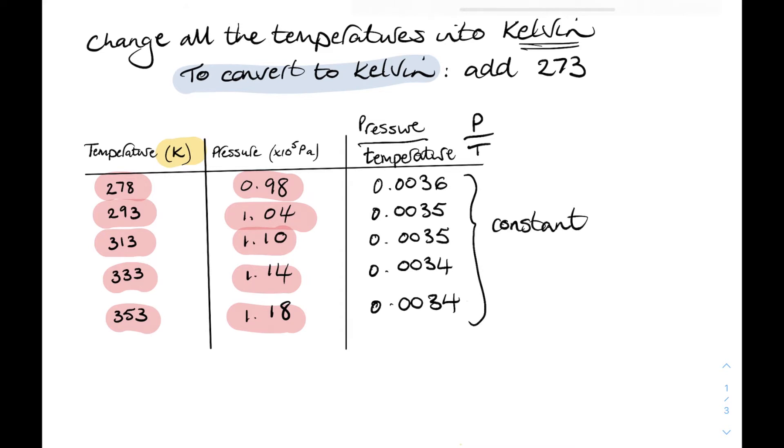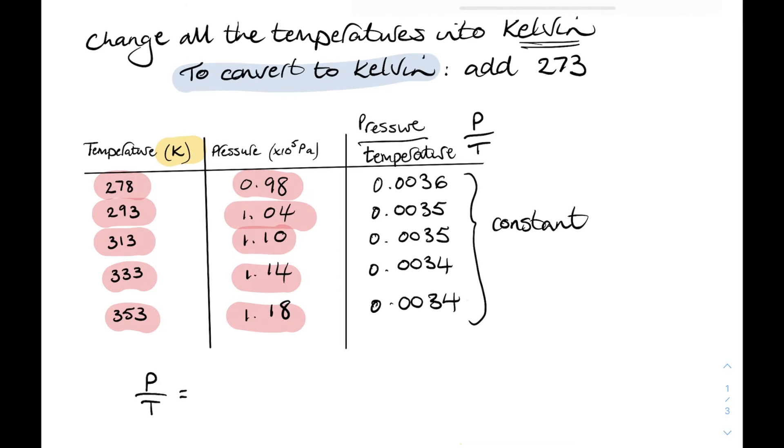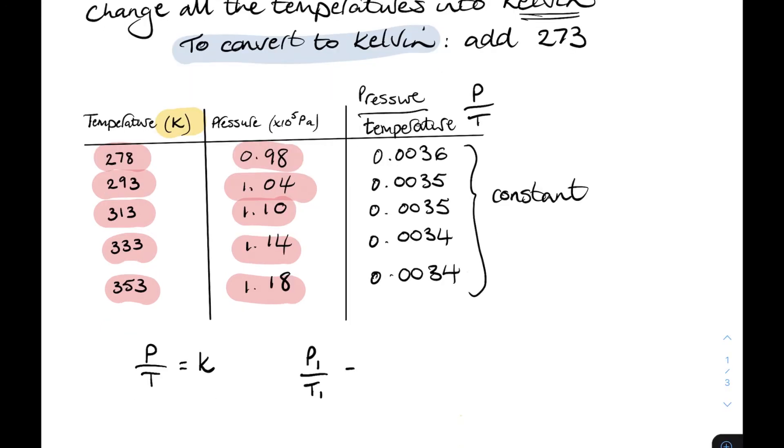So we can write that like this. P over T equals a constant or indeed P1 over T1 equals P2 over T2. And that's the second in the gas law equations, the pressure law. But remember, your temperature must be in Kelvin.